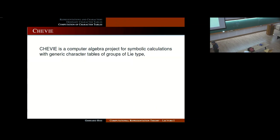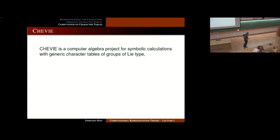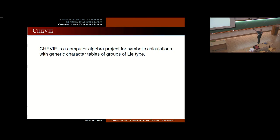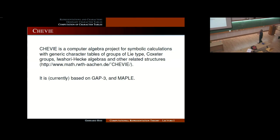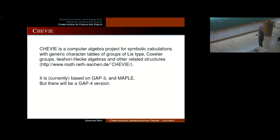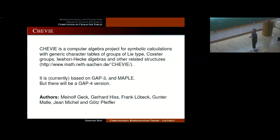Chevie is a computer algebra system designed to work with these generic character tables. It has a collection of generic character tables and programs to manipulate them — inducing characters, tensoring characters, specializing characters, and similar operations. It also has a part which works with related structures like Coxeter groups, Iwahori-Hecke algebras, and other related structures. This part is currently based on GAP3, and the generic character table part is currently based on Maple, but a GAP4 version is planned.